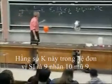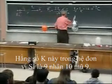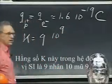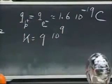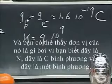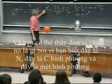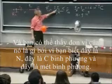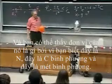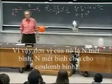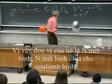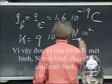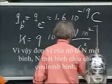This constant K in SI units is 9 times 10 to the ninth. And the unit you can find out because you know that the force is in Newtons, the charges are in Coulombs squared, and the distance is in square meters. So the unit of K is Newton square meters divided by square Coulombs.